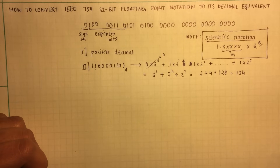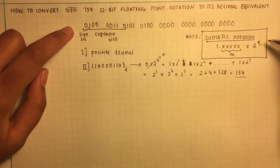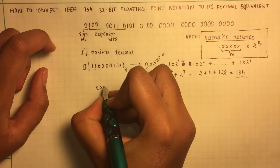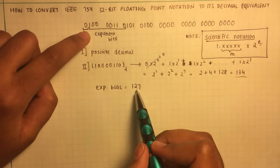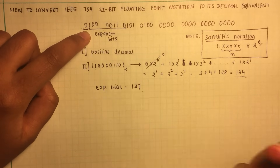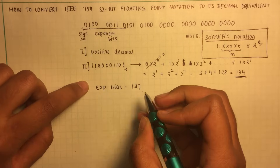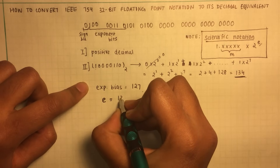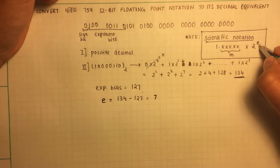Now, we have to make sure that we deduct the bias from this value. An exponential bias is included while representing it in IEEE 754 format, because these eight bits need to represent negative and positive exponential values. So the exponential bias for single-precision floating-point notation is 127. Any exponent bits that represent a number less than 127 would result in a negative exponential number. But since we have a number that's greater than the exponential bias, our actual exponential value would be a positive number. So it would be 134 minus the bias, and we would get 7. So our exponential value is 7.